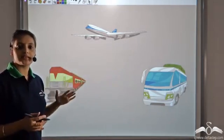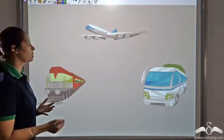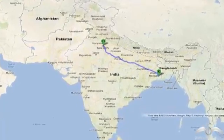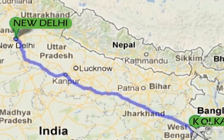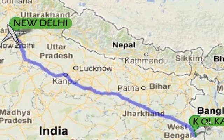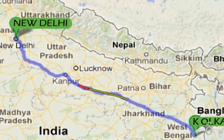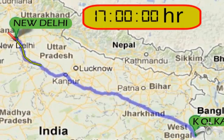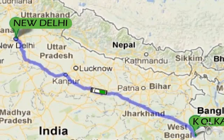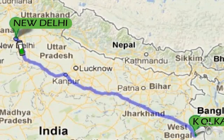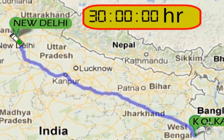What makes the difference between these three options? If you go from Kolkata to New Delhi, a plane takes two hours to cover that distance. A train would take around seventeen hours to travel that same distance. And a bus takes thirty hours for that same distance.